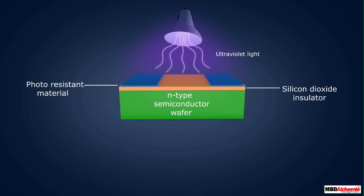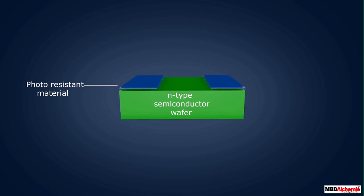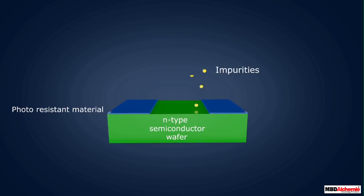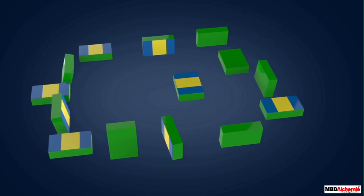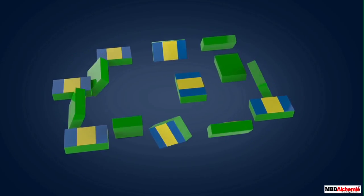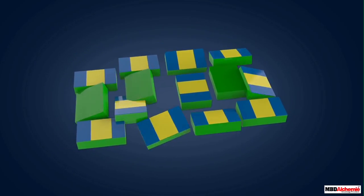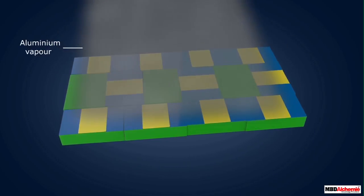After this, masking is done and ultraviolet light is made incident on it. Wherever the light is incident over the photo-resistive portion, it becomes hard and no chemical reaction can take place over it. Next, silicon dioxide is removed with the help of the etching process. Lastly, the required impurities are added. This process is repeated to obtain different geometries required to complete the chip circuit design.